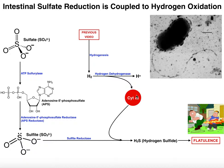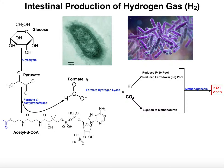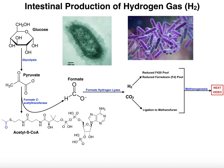Before we get to the end of the video, I want to show you where we actually get reduced equivalents of cytochrome C3. We saw in the previous videos how certain bacteria actually generate hydrogen gas, and for the purpose of methanogenesis, hydrogen gas can be used to generate reduced cofactors such as reduced F420 and reduced ferredoxin. Here, they can also be used to generate reduced cytochrome C3. These bacteria that reduce sulfate have an enzyme called hydrogenase, which literally takes the electrons from hydrogen and puts them on cytochrome C3, generating a reduced cytochrome C3 pool in proportion to how much hydrogen gas is available. The reduced cytochrome C3 then donates its electrons multiple times to reduce sulfite into hydrogen sulfide.